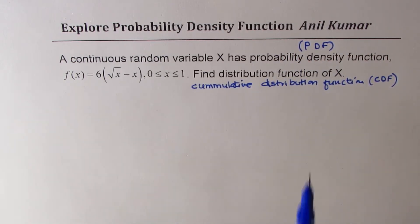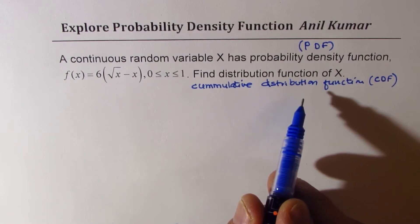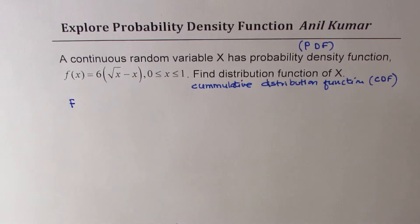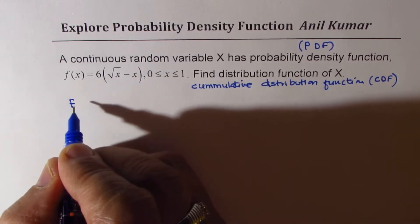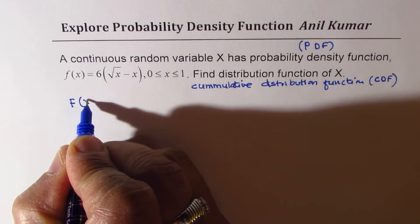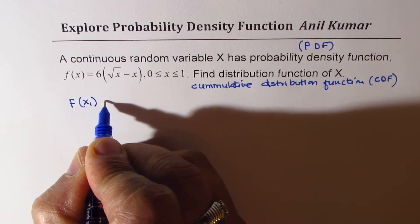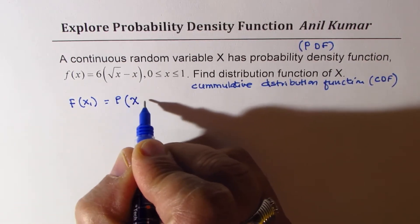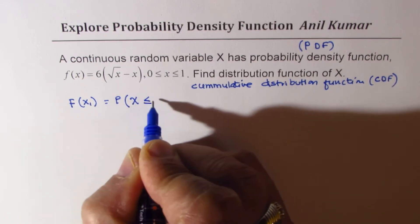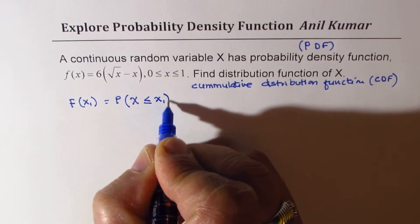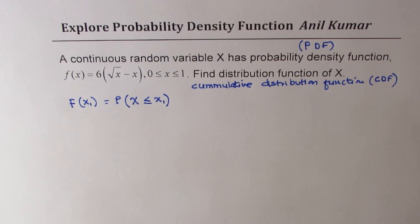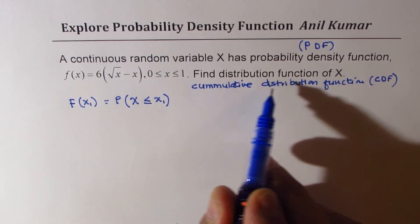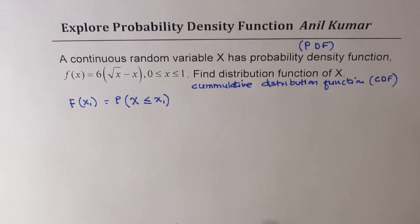From the very basic definition, it is actually the integral of this function. So it is the function at x1, where the probability of the random variable x is less than or equal to the value x1. That is how we define a cumulative distribution function.